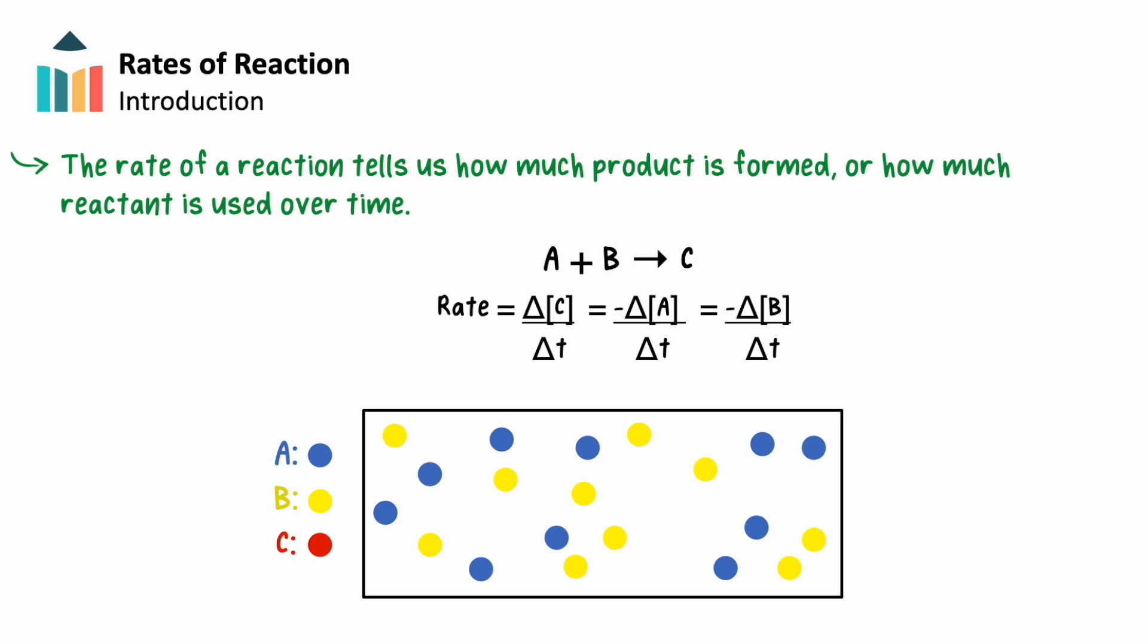For example, if a reaction has the equation A plus B reacts to make C, then the rate of the reaction can be found in three different ways. One, by taking the change in concentration of product C divided by change in time.